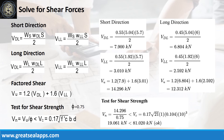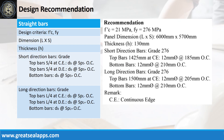At short direction, shear force from dead load is 7.9 kN and live load is 3.01 kN, for a factored shear force of 14.296 kN. At long direction, shear force from dead load is 6.804 kN and live load is 2.592 kN, for a factored shear force of 12.312 kN. The nominal shear force is 19.061 kN, which is less than the concrete capacity of 81.02 kN.